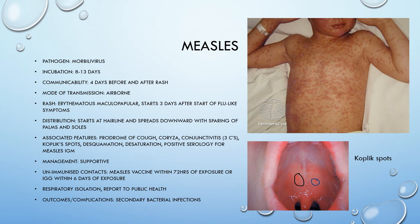Moving on to measles, caused by morbillivirus. The incubation is 8 to 13 days, and communicability is 4 days before and after the rash. It's airborne transmission. The rash is an erythematous maculopapular rash that starts 3 days after the start of flu-like symptoms. It starts at the hairline and spreads downward, sparing the palms and the soles. It's associated with the prodrome of cough, coryza, and conjunctivitis — the 3 Cs — as well as Koplik spots, desquamation, and positive serology for measles IgM. Management is supportive. Unimmunised contacts should get a measles vaccine within 72 hours of exposure, or IgG within 6 days. This requires respiratory isolation — airborne precautions in hospital — and must be reported to public health. A potential complication is secondary bacterial infection.